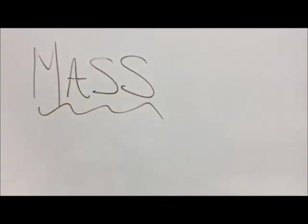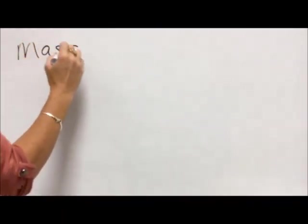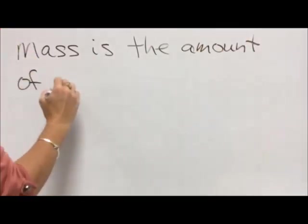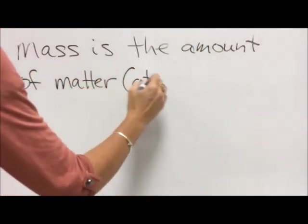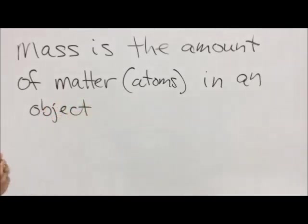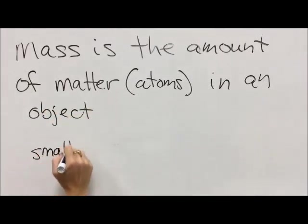So let's talk about mass. Mass is the amount of matter in an object. Also could be called the amount of atoms in an object because all things that are matter are made of atoms.